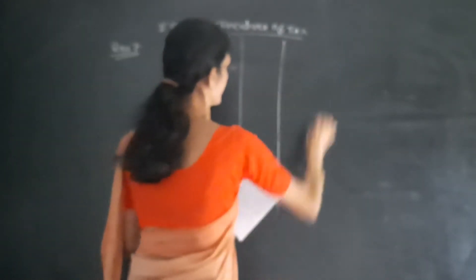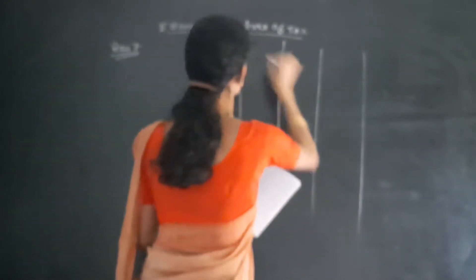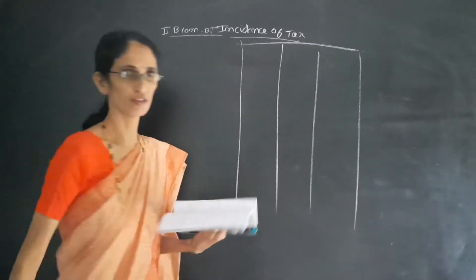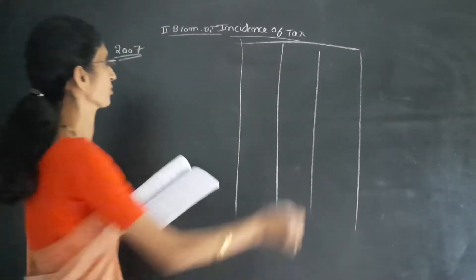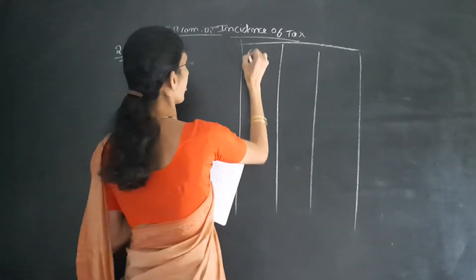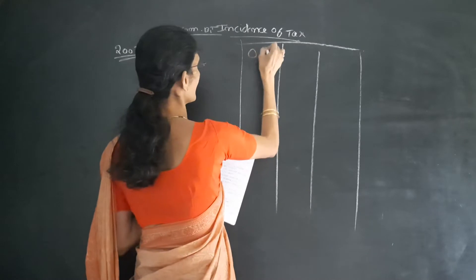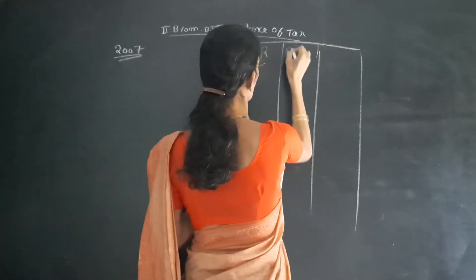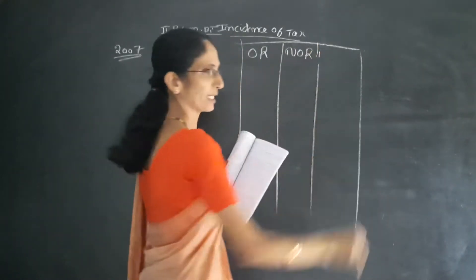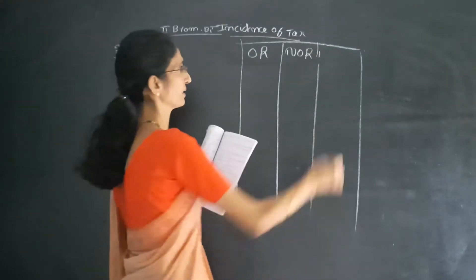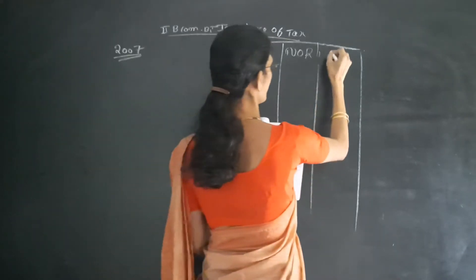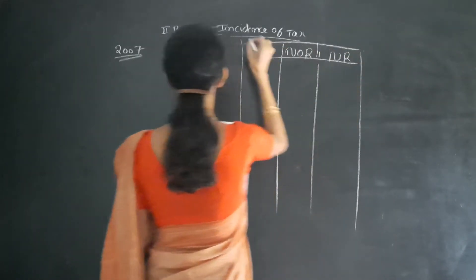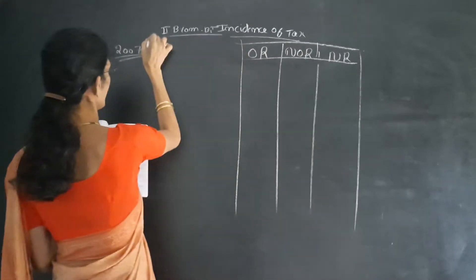This question appeared for the year 2007. As usual, the first column should be Ordinarily Resident, the second one is Not Ordinarily Resident, and the last column is Non-Resident.